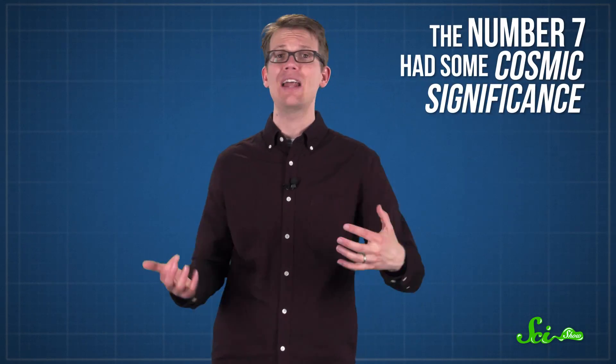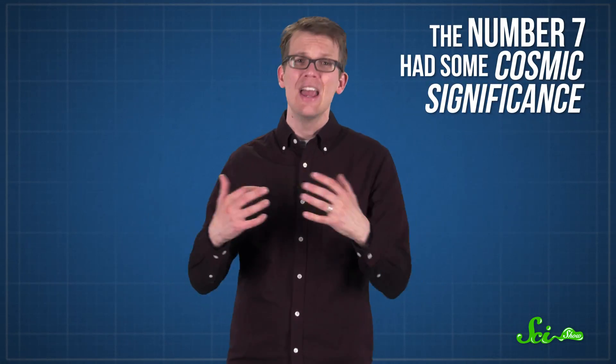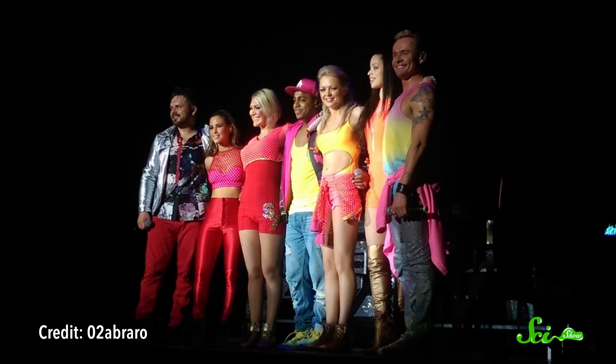So in a way, colors are kind of arbitrary. It turns out that Newton created the Roy G. Biv designation because he thought the number seven had some cosmic significance, and he wanted to connect the principal colors to the seven musical notes and other famous groups of seven.